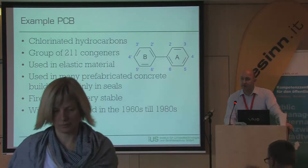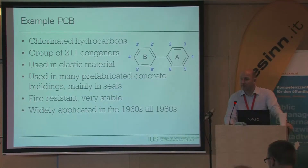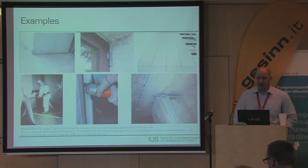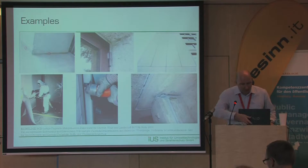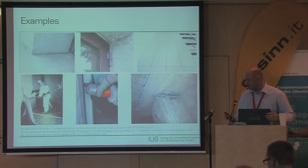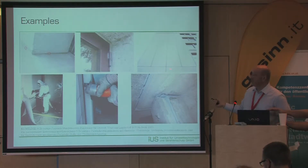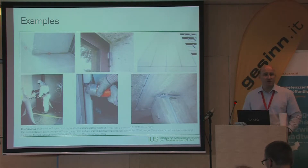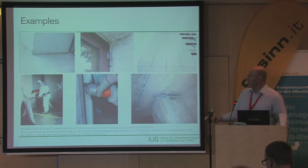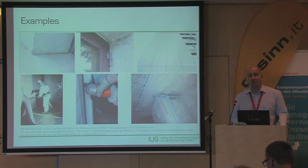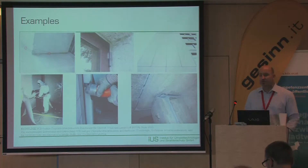Here are some examples: in the upper row you see buildings and pieces where PCB is used — you can see the elastic seals. This is a typical building where you would expect PCB to be both inside and outside. And you can see that if a building is heavily contaminated, the remediation involves significant work safety measures — it is mainly done by hand, so this is really difficult work.